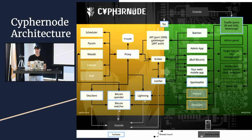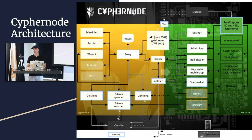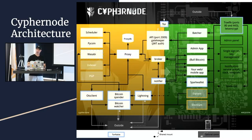When we deploy an application there, we can specify if we want it exposed on the internet or not. BullBitcoin is public because we want our users across Canada to access it. But for example, there's a batcher - another Cyphernode app that allows us to batch transactions together. Instead of sending one transaction per order, we can batch them into huge transactions that take less space on the blockchain and lower our cost. The batcher is not exposed outside - it's local and private, but BullBitcoin can talk to the batcher to add outputs to the batch.